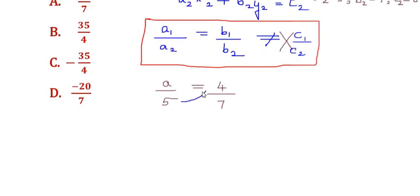By cross multiplication, 5 multiplies with 4 and 7 multiplies with a. So we have 7a equals 5 times 4. By dividing both sides by 7, the 7s cancel, and we are left with a equals 20 over 7.